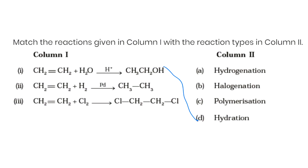Reaction two: a double bond reacted with hydrogen gas in the presence of a palladium catalyst, or maybe a nickel or platinum catalyst. This is a hydrogen addition. We started with alkene, reacted with hydrogen, made a hydrogen addition, then ended with alkane.